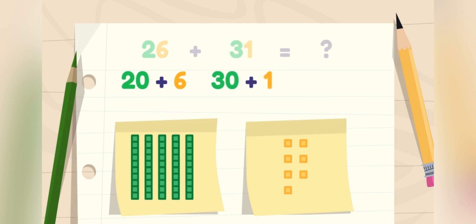Super! Now that the numbers have been expanded, let's add them together. First, let's add the ones. Six plus one is seven.